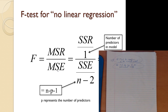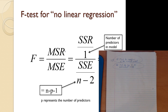That F-ratio is just a comparison of the mean squared regression relative to the mean squared error. In essence, we're testing how much of the variation in Y we're able to explain relative to the amount of variation in Y that we're unable to explain. The bigger that number, the better our model — the more we can explain relative to what we can't explain.